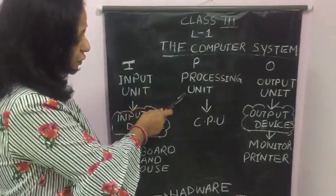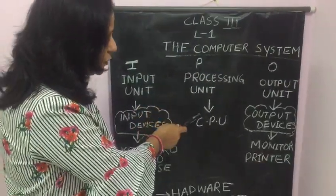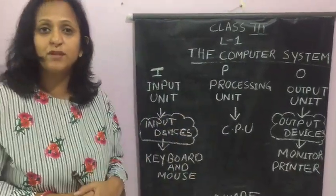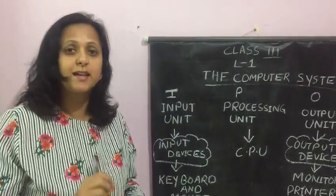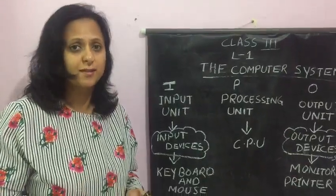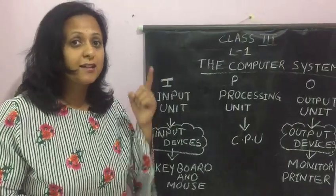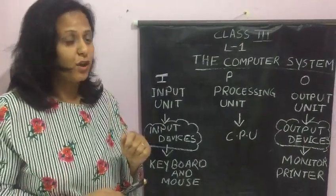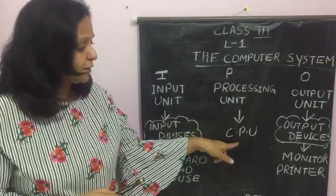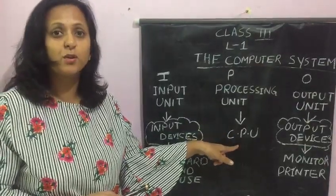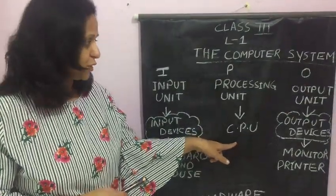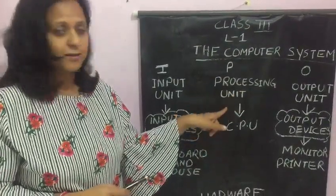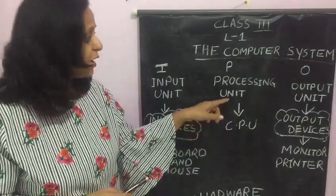Now, the processing unit. The processing unit is the CPU. The full form of CPU is Central Processing Unit, and it is the brain of the computer. CPU is known as the brain of the computer, and it consists of the processing unit.